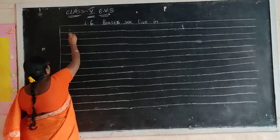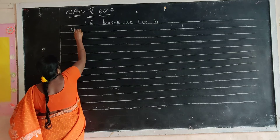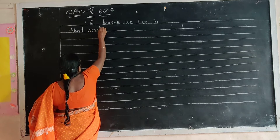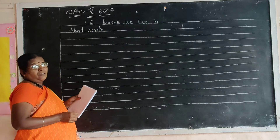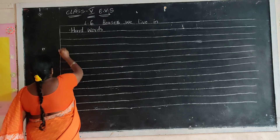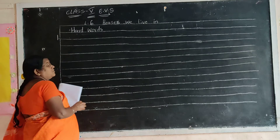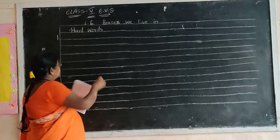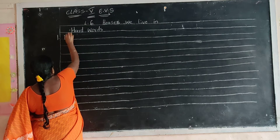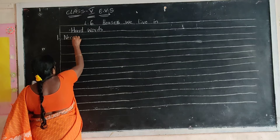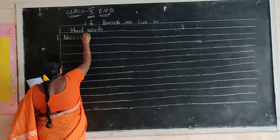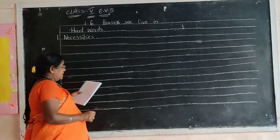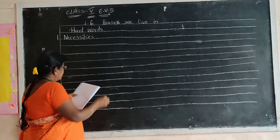Hard words. Put that in hard words. First one: Necessities. Put one in the margin. Write the spelling: N-E-C-E-S-S-I-T-I-E-S. Necessities. Second one.